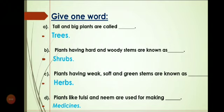Number B: Plants having hard and woody stems are known as Shrubs — S-H-R-U-B-S, Shrubs. Now again: Plants having hard and woody stems are known as Shrubs.